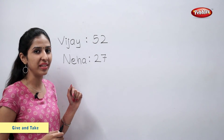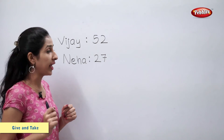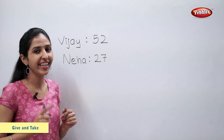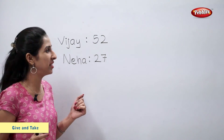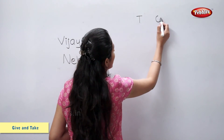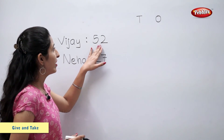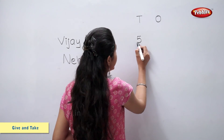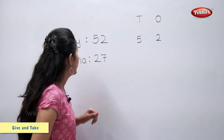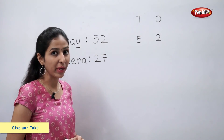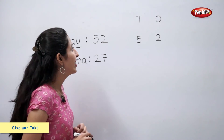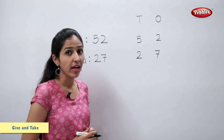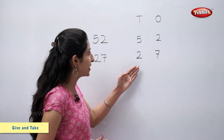Now let us look at this example. Vijay had 52 pearls. He gave 27 pearls to Neha. Now we have to find the number of pearls left with Vijay using 10s and 1s. 52 means 5 tens and 2 ones. 27 means 2 tens and 7 ones.